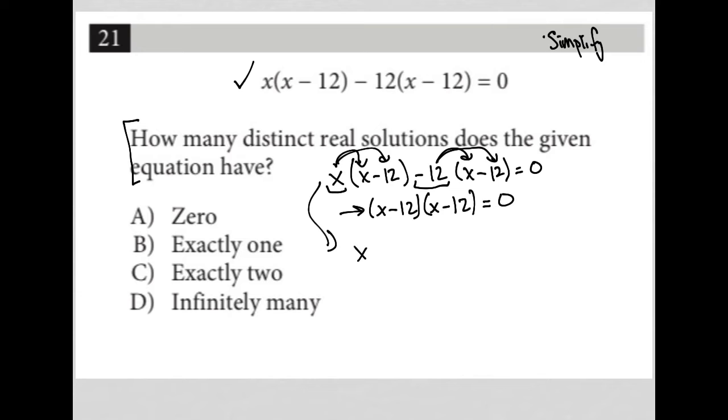We'd have x times x is x squared, minus 12x, and then another minus 12x by distributing the negative 12, and then a plus 144, because negative 12 times negative 12 is positive 144, which equals 0.